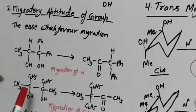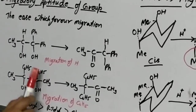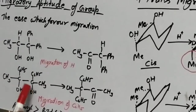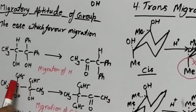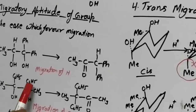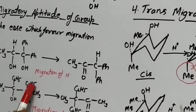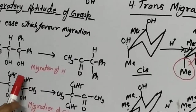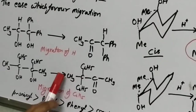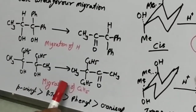Similarly, in another case, there is competition between methyl group and phenyl group as to which will migrate. In this case, phenyl group will migrate. OH will be removed from here, carbonium ion is produced. Phenyl group will migrate because it can easily provide electrons to the carbonium ion. Therefore, this product will be formed — migration of phenyl group.